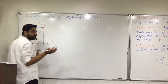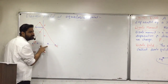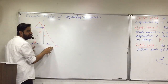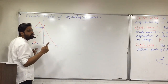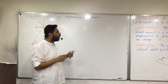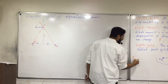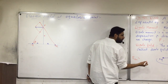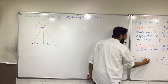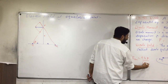Now, what is a dipole? Two equal and opposite charges separated by a certain distance forms a dipole. Due to which we have found out the value of electric field on the axis. E axial was 2kp upon r cube.